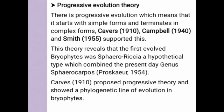This theory reveals that the first evolved bryophyte was the Protohepatic, a hypothetical type which combined the present genus Sphaerocarpus. Cavers in 1910 proposed a progressive theory and showed a phylogenetic line of evolution in bryophytes.